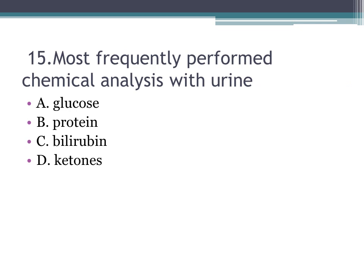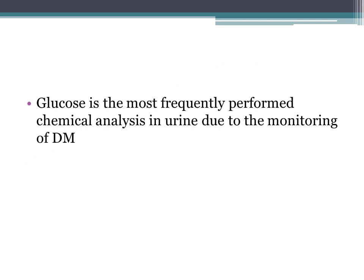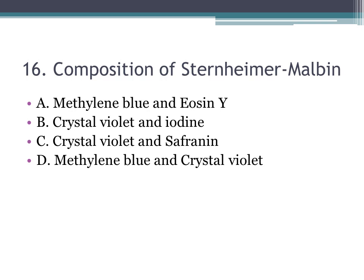Number fifteen: the most frequently performed chemical analysis with urine — A. glucose, B. protein, C. bilirubin, D. ketones. The correct answer is A, glucose. Glucose is the most frequently performed chemical analysis in urine due to the monitoring of diabetes mellitus.